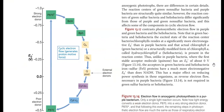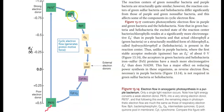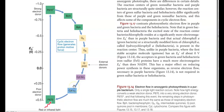In cyclic photophosphorylation, it involves the pigment bacteriochlorophyll instead of chlorophyll, which is involved in oxygenic photosynthesis. Here the reaction centers of the bacteriochlorophyll get excited through sunlight, and the electron moves in a cyclic process, finally reaching back to the bacteriochlorophyll reaction center itself. But during this cyclic movement, the flow of electrons results in the generation of a proton motive force that can be successfully harnessed for ATP synthesis.